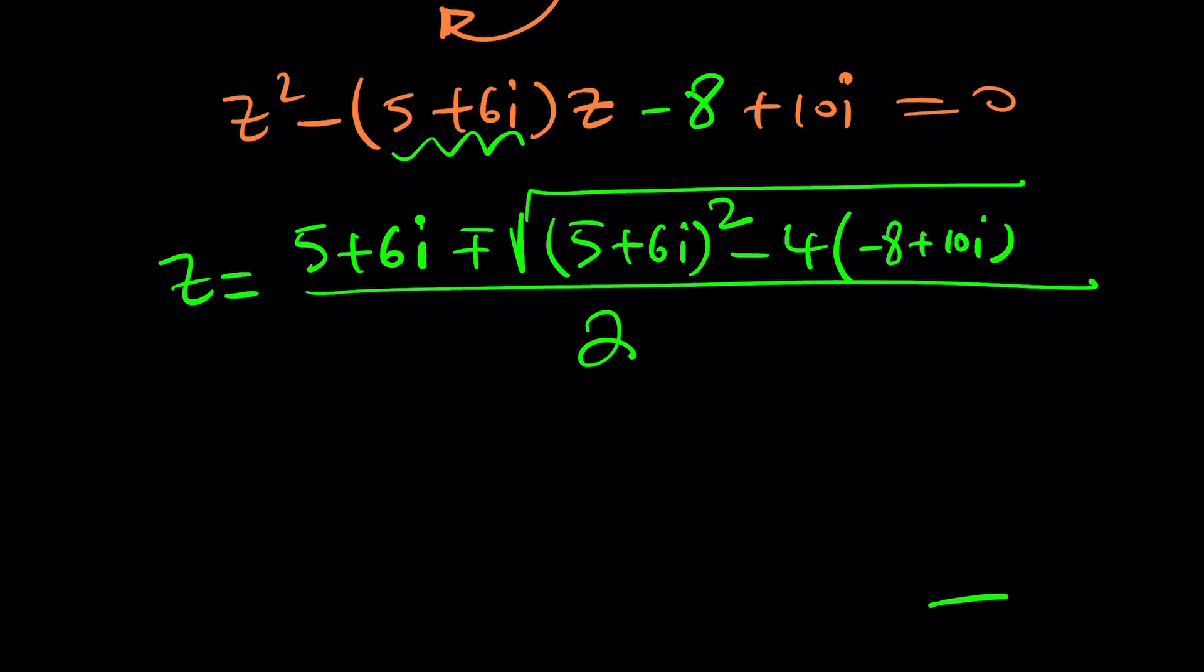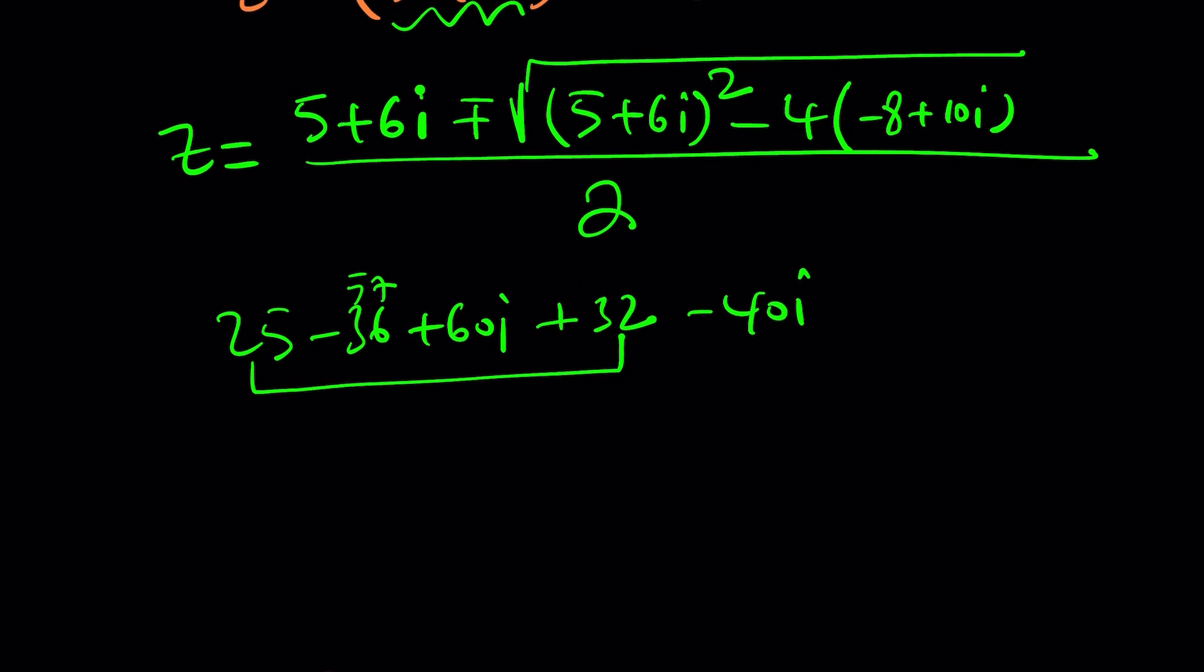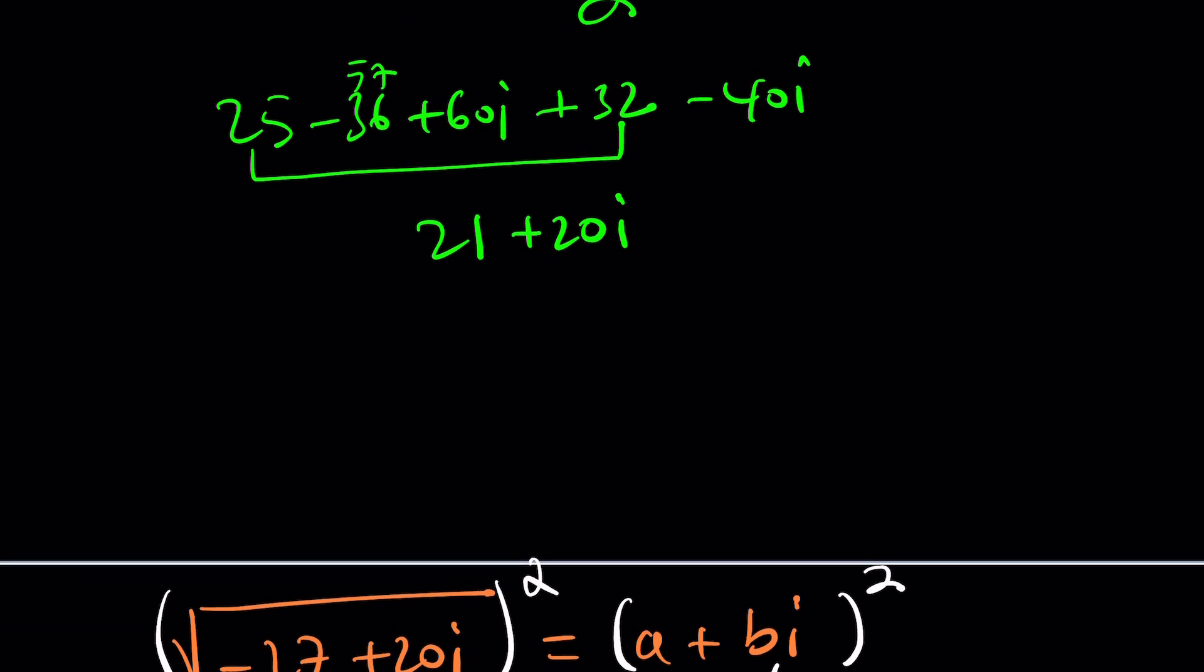This should be better. If I do the discriminant again, 25 minus 36 plus 60i plus 32 minus 40i. This would be now 57. And 57 minus 36 is 21 plus 20i. Yes, this should be a perfect square. And I can quickly show you how. I think it'll be like 25 minus 4 plus 20i. And then this should be 5 squared plus 2i squared plus 2 times 5 times 2i. In other words, this is 5 plus 2i quantity squared.